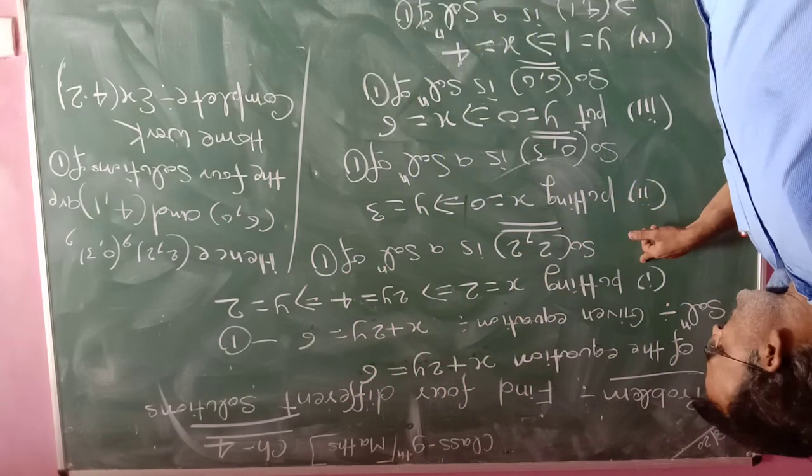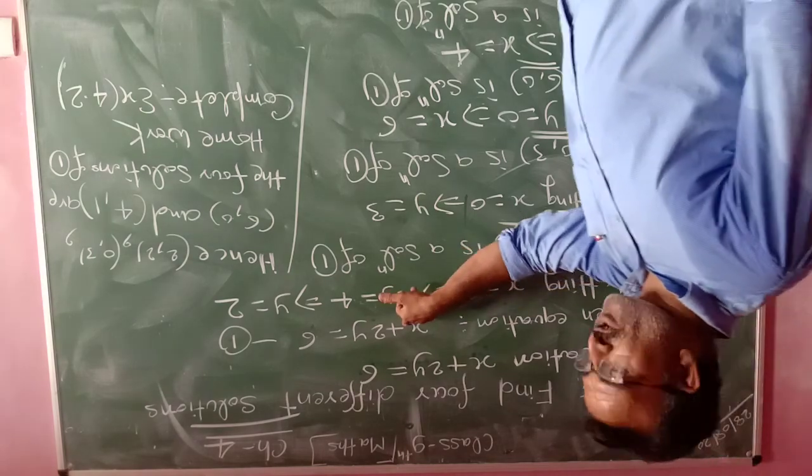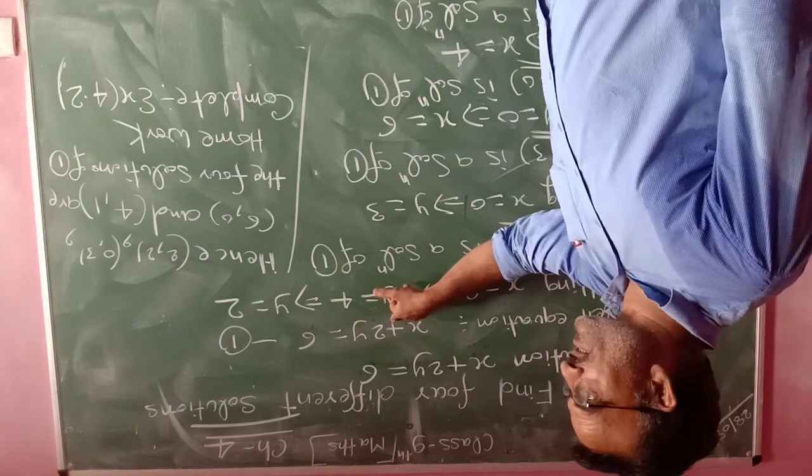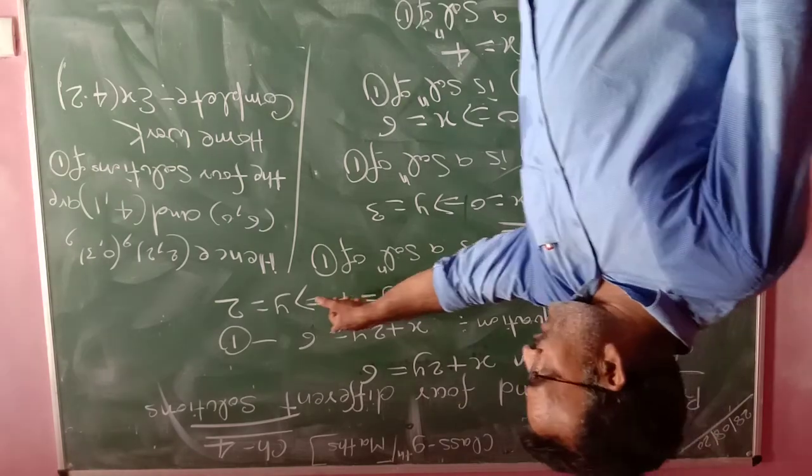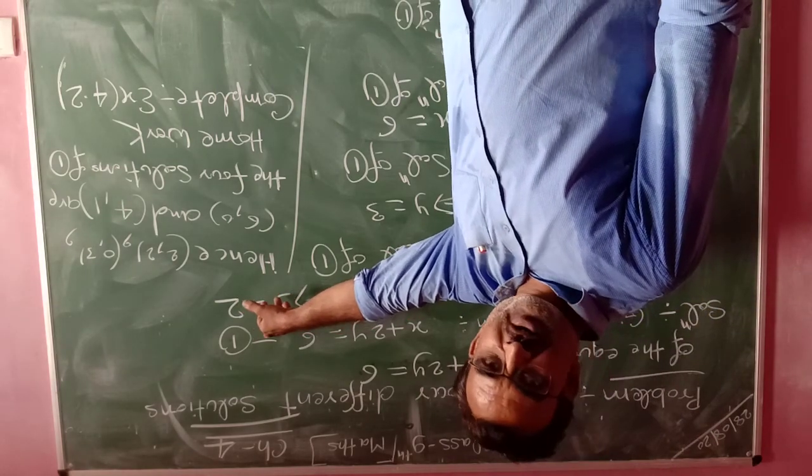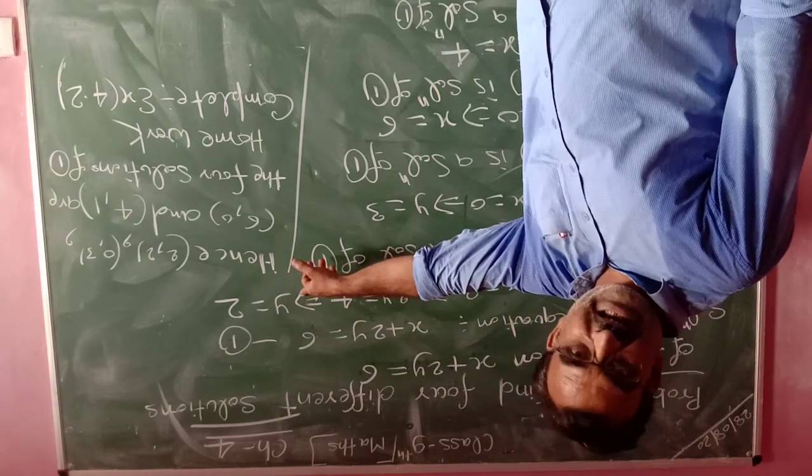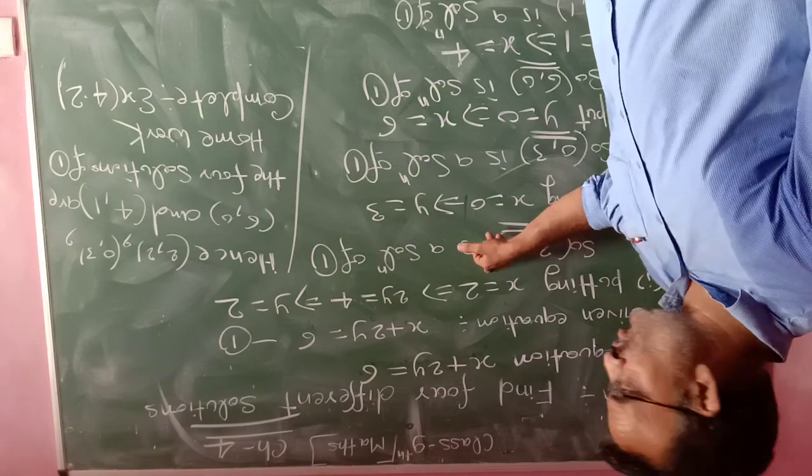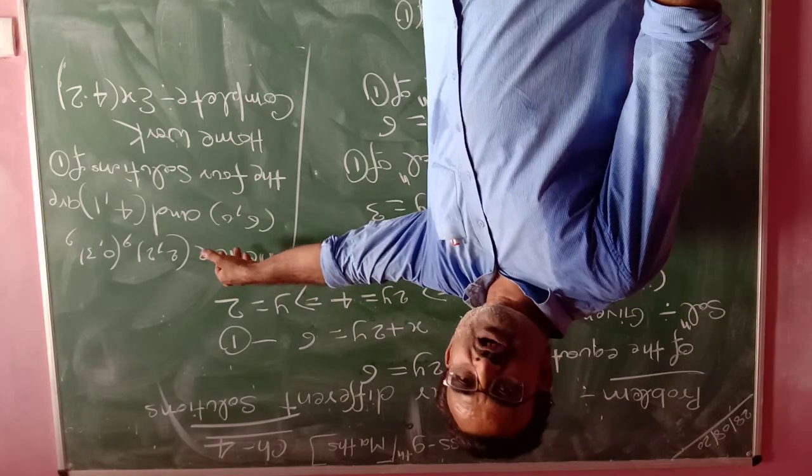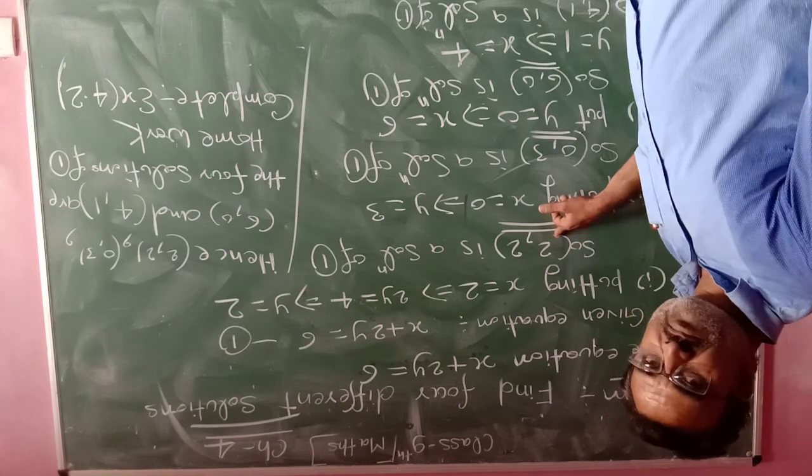For the first solution, putting x equal to 2 in the given equation, this becomes 2y equal to 6 minus 2, equal to 4, means y equal to 2. Therefore, x equal to 2 and y equal to 2 are the solution of the given linear equation.